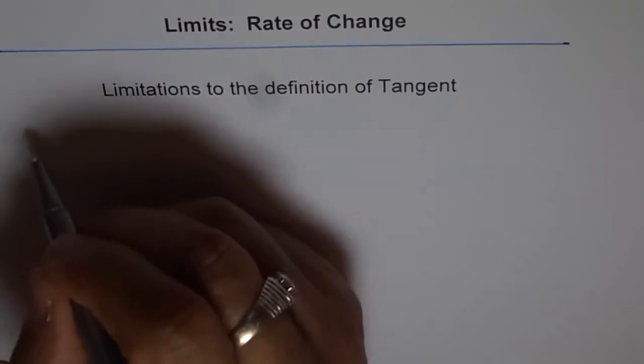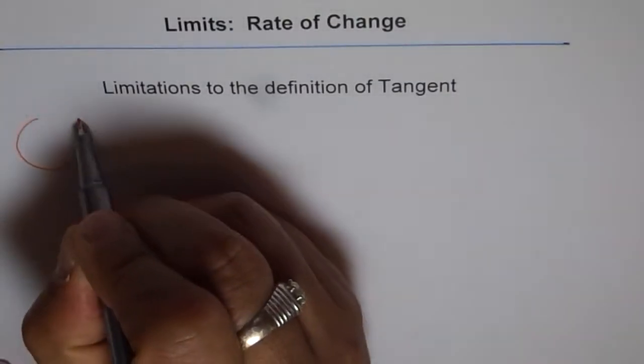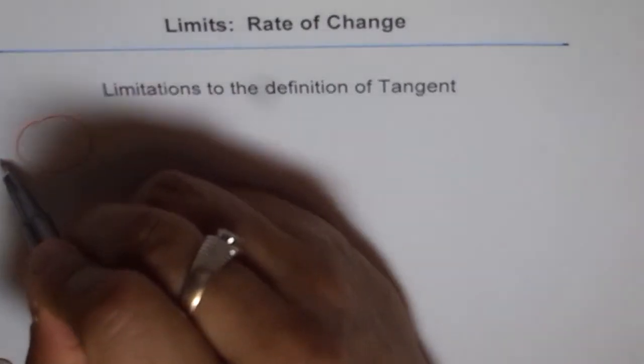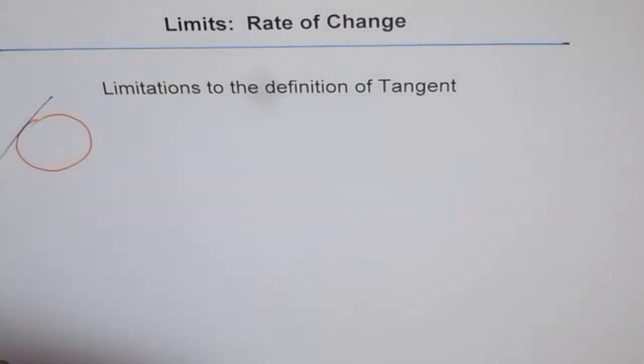Now what is a tangent? We know tangent like you have a circle here, correct? And in that circle if there is a line which just touches the circle at one point like this,